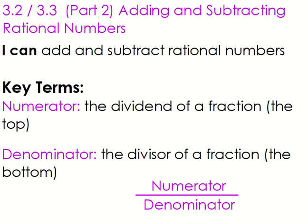So here we are, part two of 3.2, 3.3. We are still adding and subtracting rational numbers. But remember, we did decimals last time, so we're going to do fractions this time. That's because rational numbers are just numbers that can be written as ratios. So that's terminating, repeating decimals, and then any fraction. So I can add and subtract rational numbers.